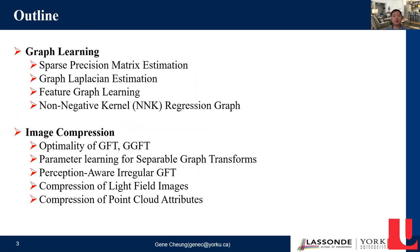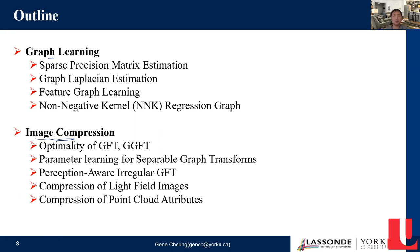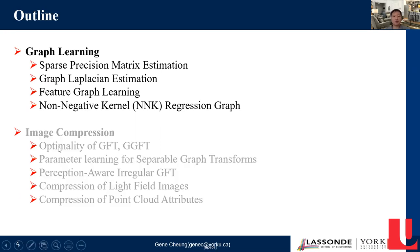Here's the outline of today's presentation, broken into two parts. In the first part, we'll talk about graph learning — different ways of learning a graph — which is important because when you're given an image, it's not naturally a signal on a graph. After graph learning, we'll talk about image compression and how we can use learned graphs or different techniques to do image compression.